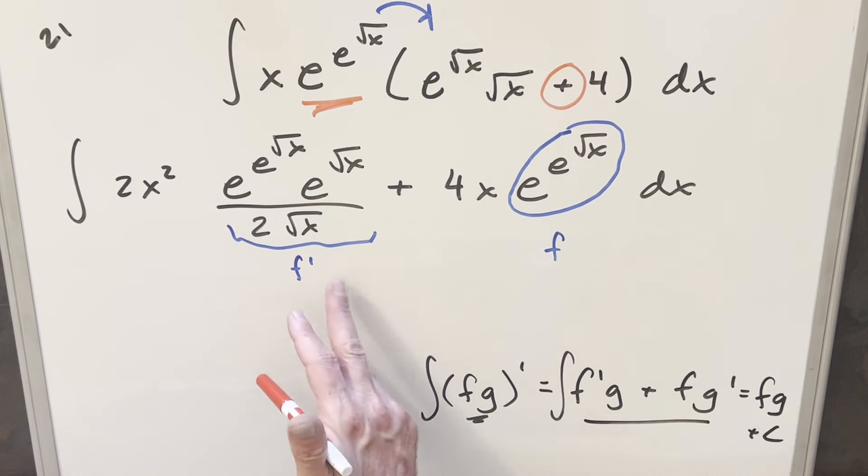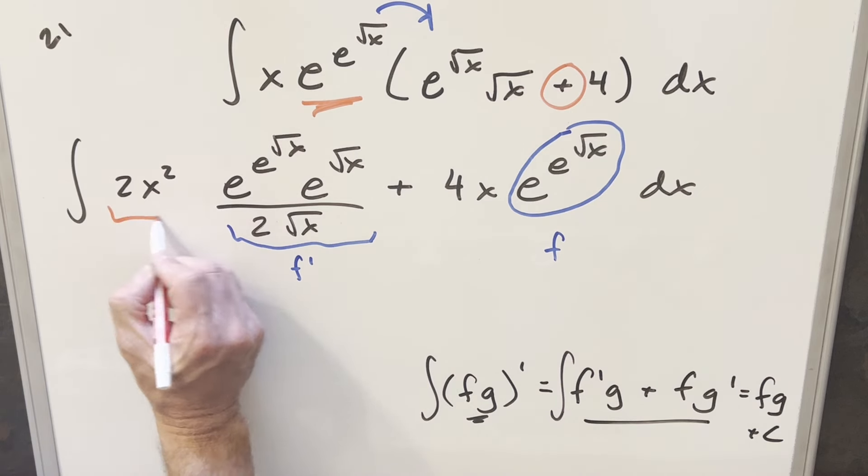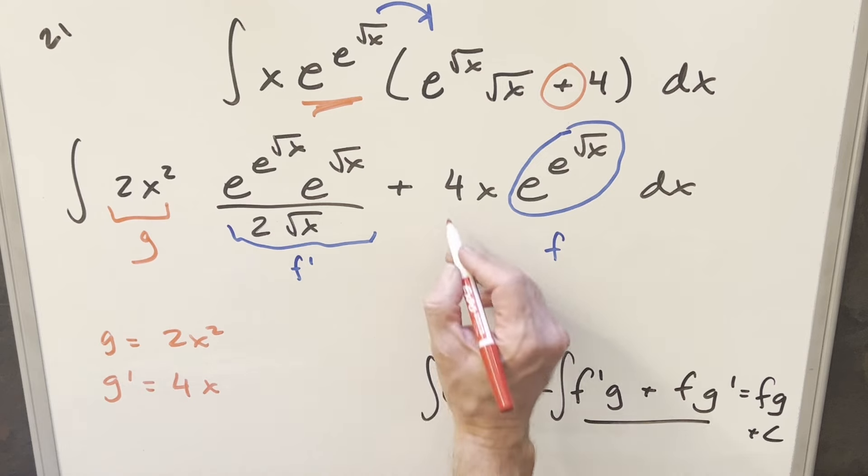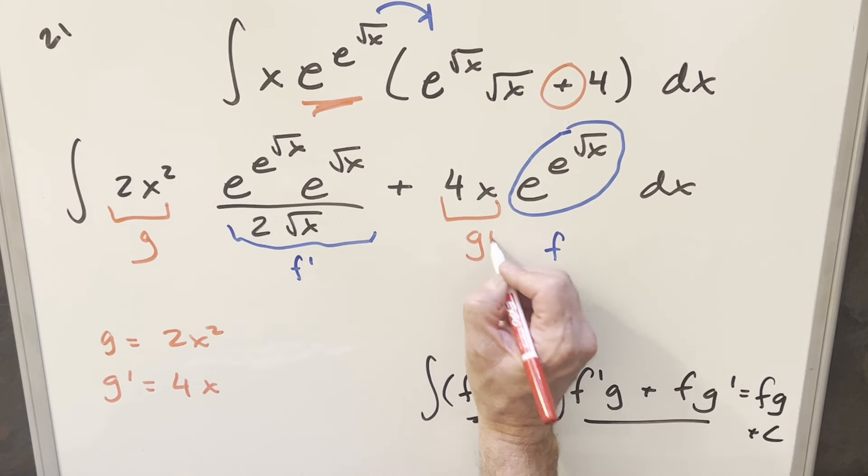Now next we need this to be our g. But then if g is going to be 2x², I can take a derivative, so g' is just going to be 4x, and that's what we have right here. This is our g'.